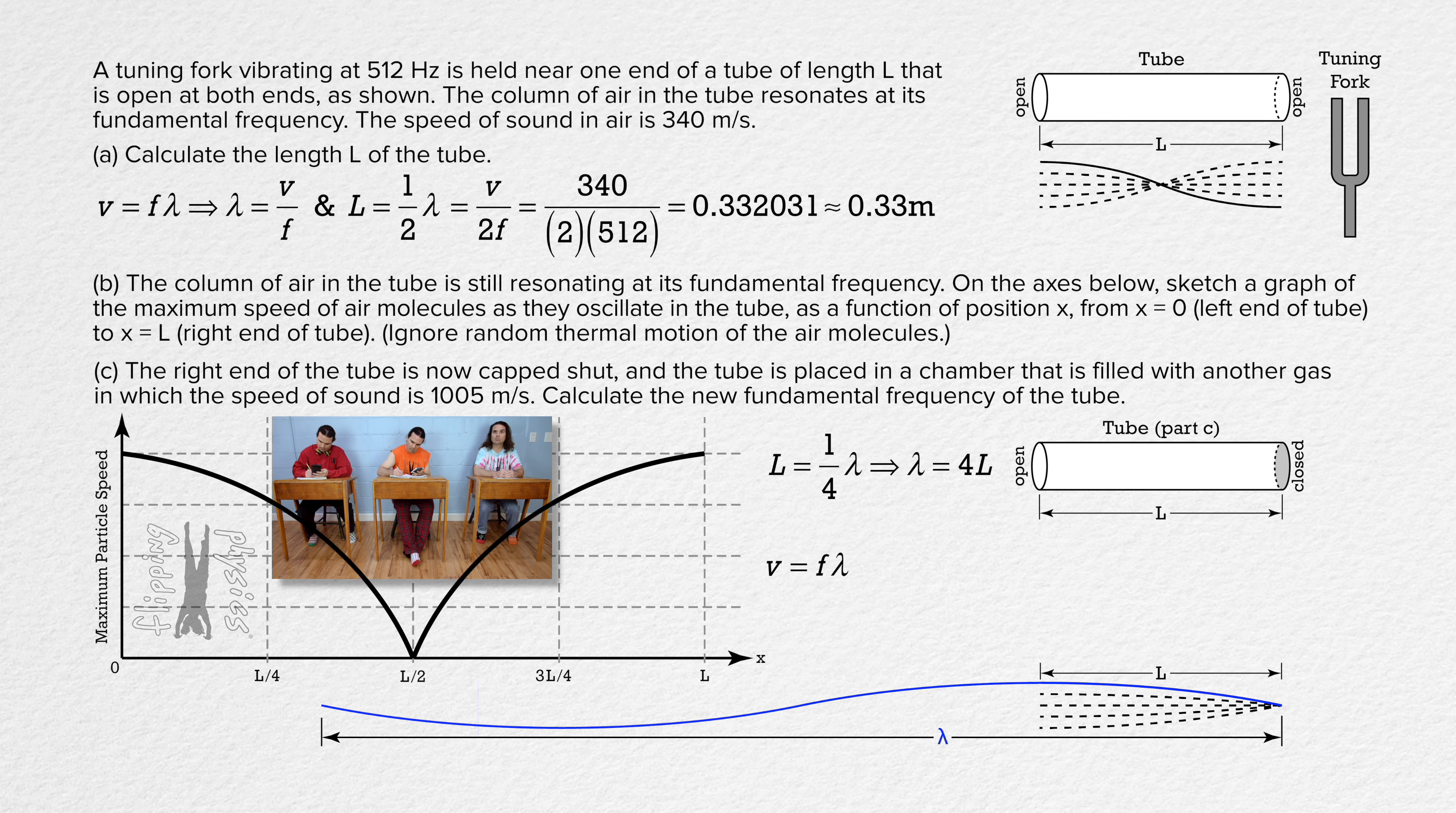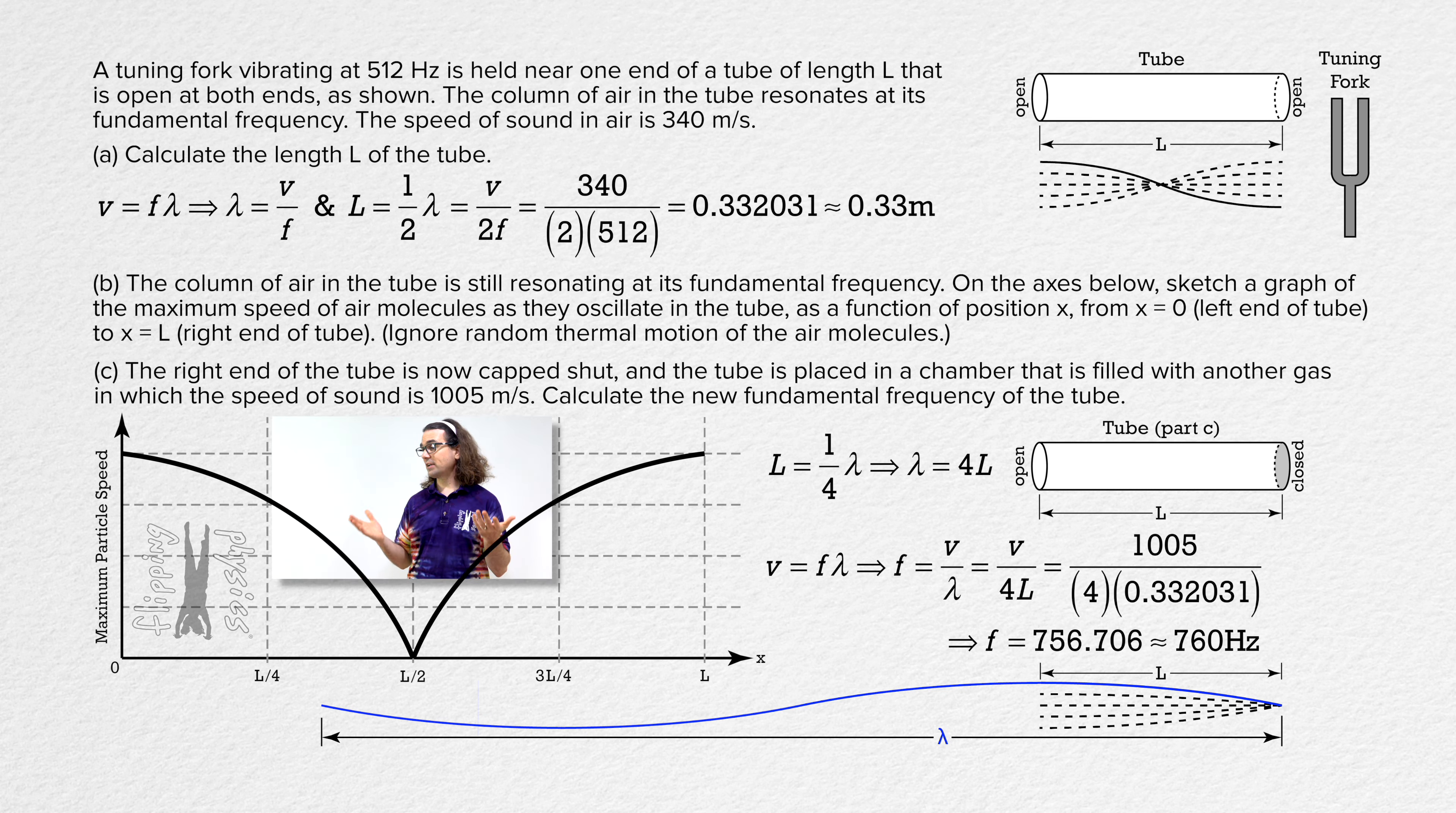Frequency equals speed over wavelength. So the fundamental frequency equals speed over 4 times the length of the tube. So the fundamental frequency equals 1005 over 4 times 0.332031, which equals 756.706 or 760 hertz with 2 sig figs. That is correct, Bo.